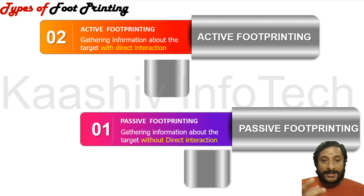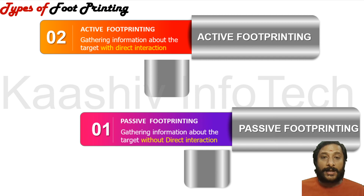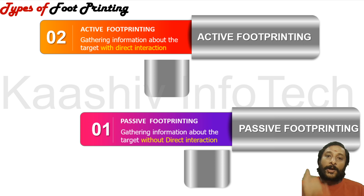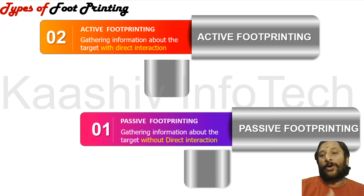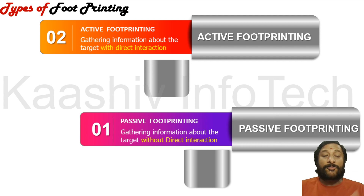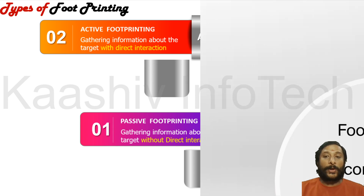Active footprinting is becoming very popular now in the current market. Active footprinting means collecting information by direct interaction — they will call you, talk to you, and try to collect information while talking. For example, asking for your password, debit card number, or CVV number by pretending to be from the bank. You should be really careful.